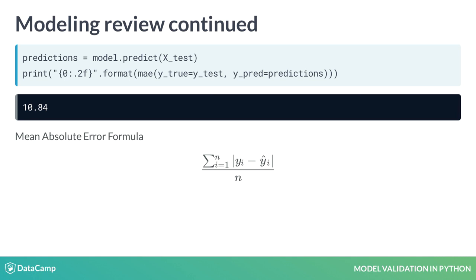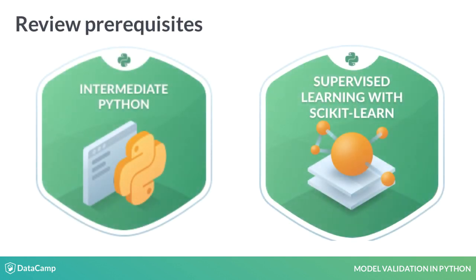This function takes two arrays as arguments: the true values, Ytrue, and the predicted values, Ypred, and returns the mean absolute error between them. This process of generating a model, fitting, predicting, and then reviewing model accuracy will be repeated throughout this course. If you are unfamiliar with these steps, you should consider taking the prerequisite courses, which will go into more detail about using Python and performing these modeling steps.